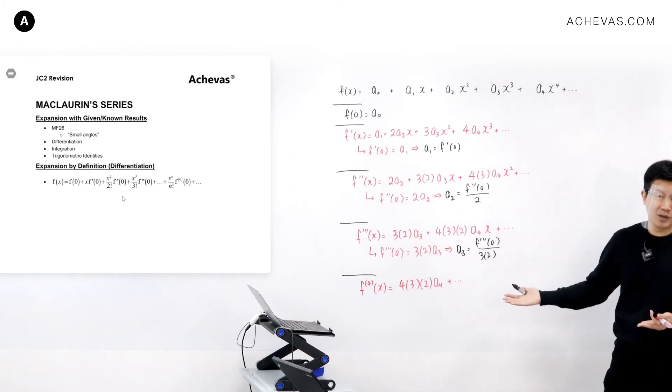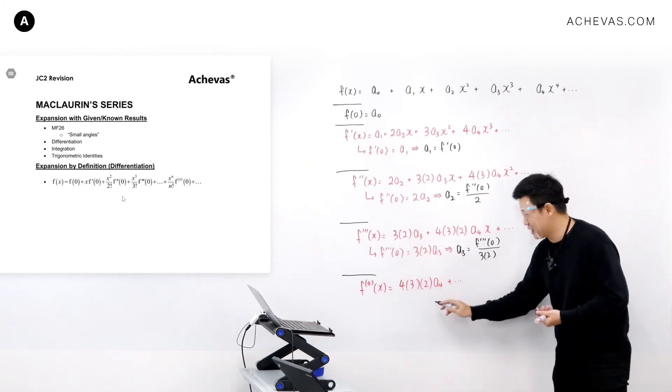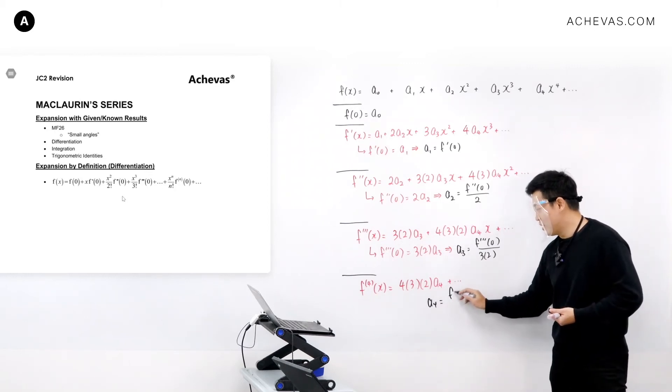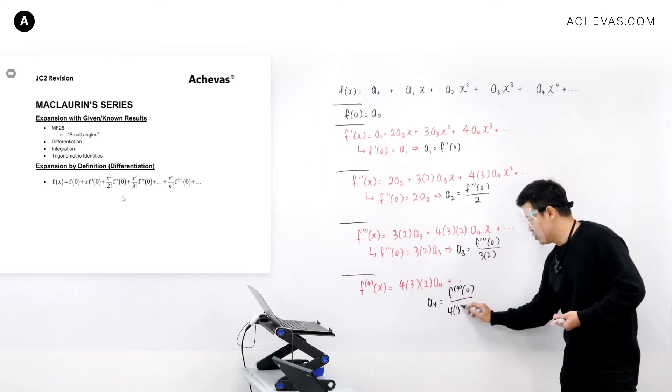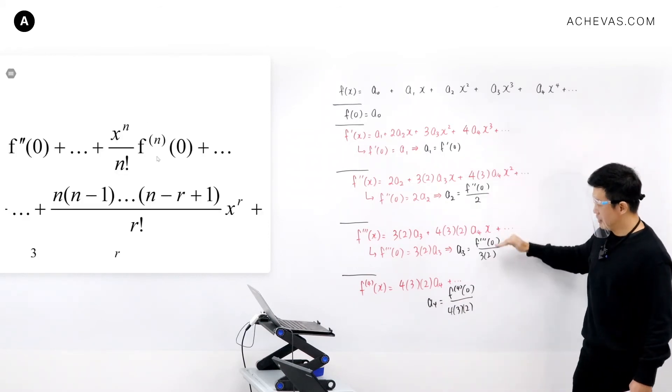I can do exactly the same thing, but I believe without me going through the whole process one more time, you can probably visualize that a4 is going to be f''''(0) divided by 4 times 3 times 2. This I deduce through pattern recognition.